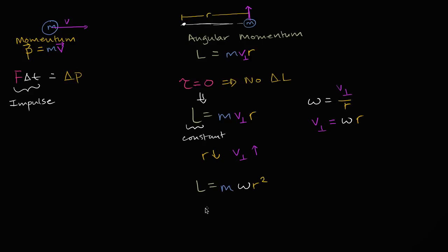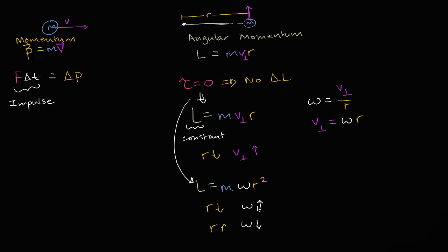So if our radius goes down and L is constant — we're still assuming no net torque — what happens to ω? Omega is going to go up. Likewise, if the radius got longer, omega is going to go down. So if you reduce the radius, you're going to start spinning faster. If you increase the radius, you're going to start spinning slower.